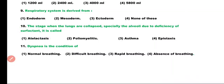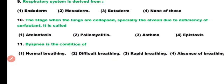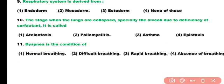Question number 11. Dyspnea is the condition of: normal breathing, difficult breathing, rapid breathing, or absence of breathing. Correct answer is option 2. Dyspnea is the condition of shortness of breath or difficult breathing.